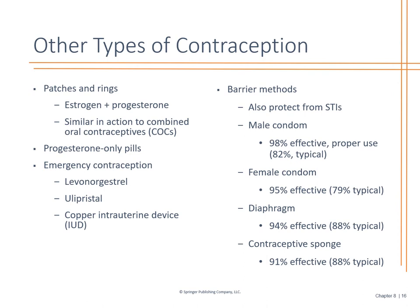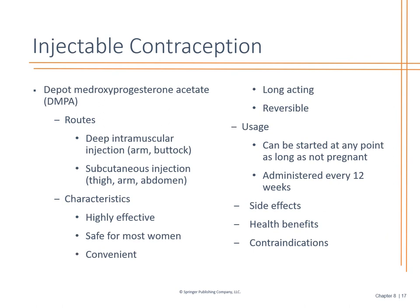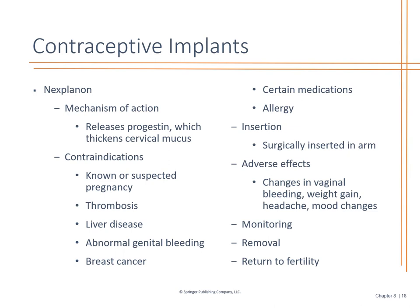Then there's Depo-Provera. A lot of people opt for it because it's one shot every three months. However, it's sometimes not as effective if the BMI is fairly high. It can be started at any point, but there are side effects — some people report weight gain. If you have someone already battling obesity, you might want to look at another route. There are also implants like Nexplanon, inserted in the arm. Discuss monitoring, removal, return to fertility, liver disease, abnormal bleeding, and blood clots prior to having it implanted.